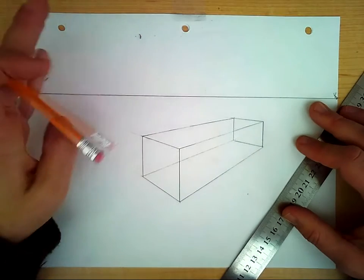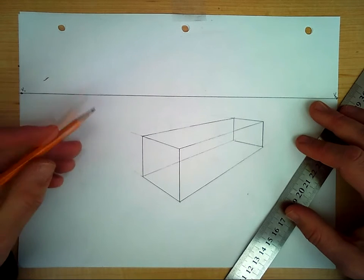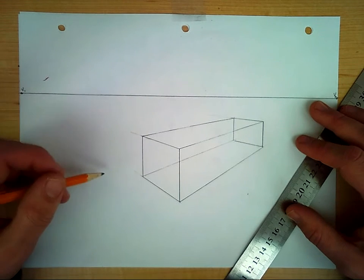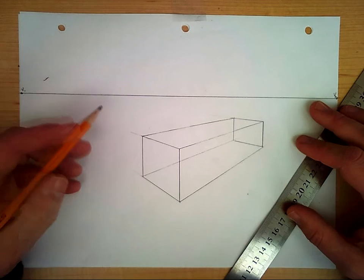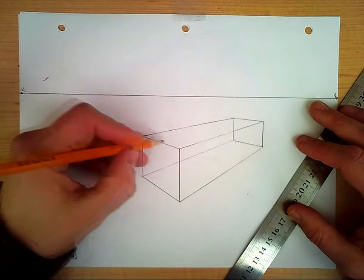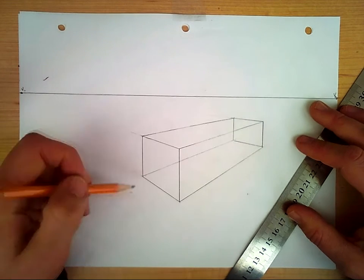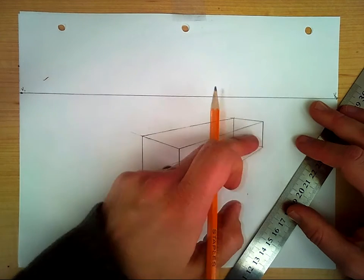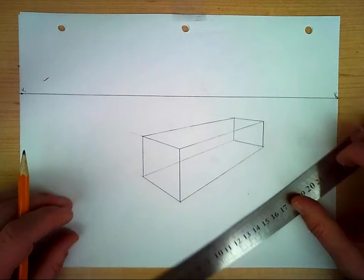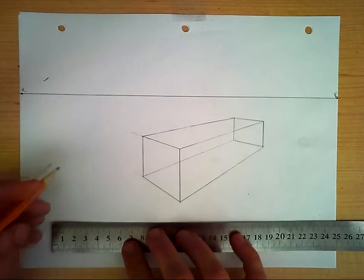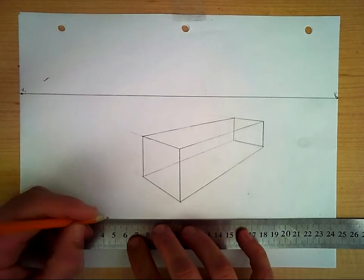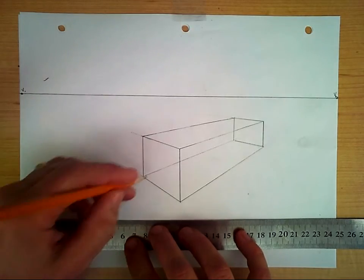There is our cylinder box, and on this end and this end, we're going to need circles. I'll show you how to do a circle in two-point perspective. First, I want to show you what we're trying to achieve here.